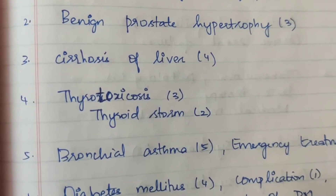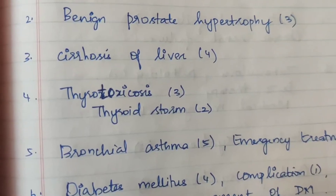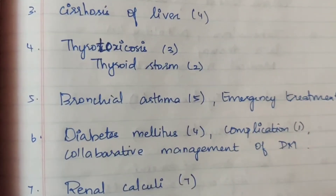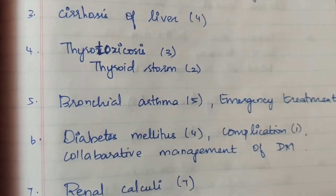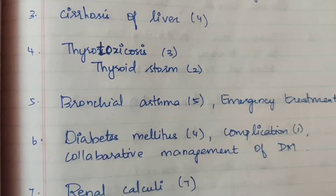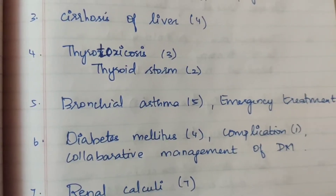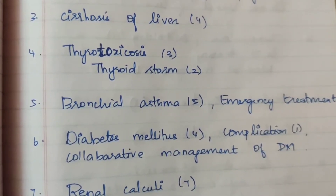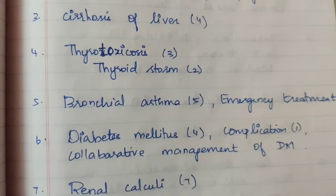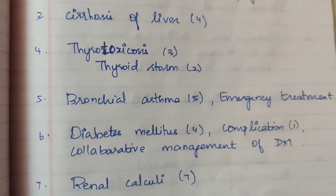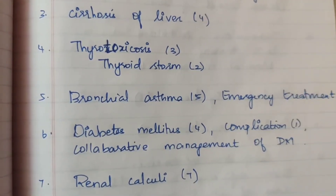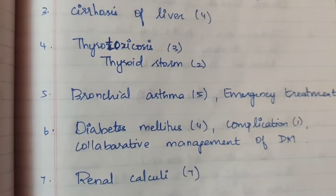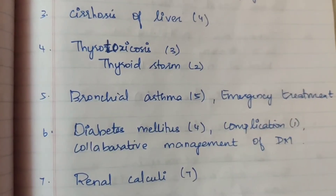Next is cirrhosis of liver, appearing four times. Fourth one is thyrotoxicosis, appearing directly three times. Thyroid storm appears 5 marks, two times. Both are similar questions but the terms are different.